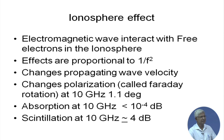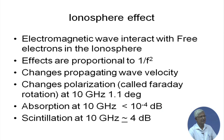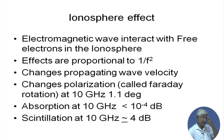Scintillation is like a bubble moving in a liquid — here it is a localized dense region of free electrons formed due to some perturbation, which then disperses. When the signal passes through it, effects like polarization change and absorption dominate, with absorption varying peak-to-peak by as much as 4 dB at 10 GHz. This is a short-term fading that needs to be countered.